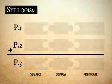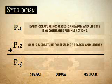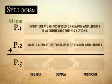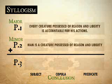Let us look at another example and solve it. Every creature possessed of reason and liberty is accountable for his actions. Man is a creature possessed of reason and liberty. We do not know the conclusion yet. In working the syllogism, we find that the first proposition is the major proposition, the second is the minor proposition, and the third — which we do not know yet — would be called the conclusion. To find the conclusion, we find the middle term connecting the major and minor proposition. What would be the middle term in this example?